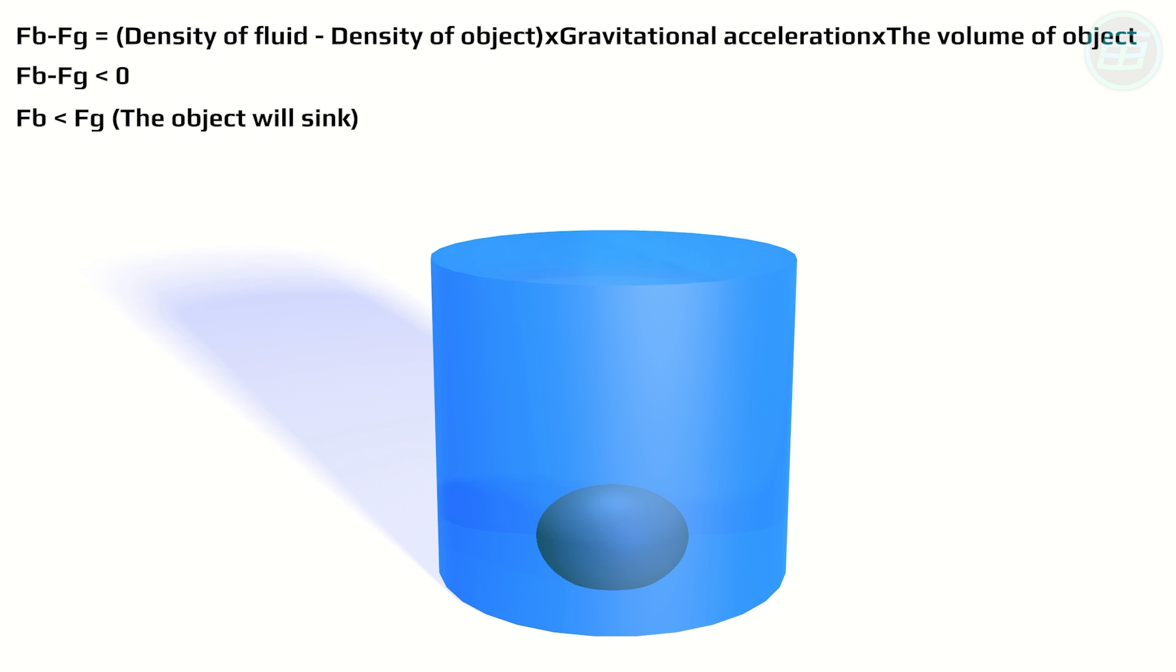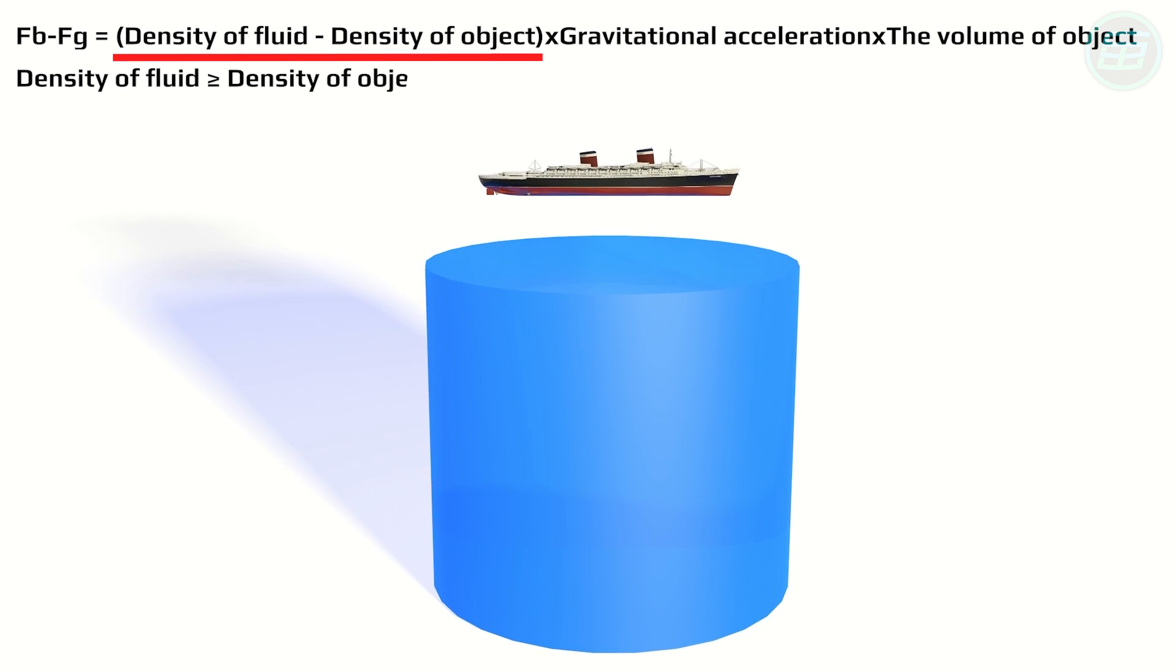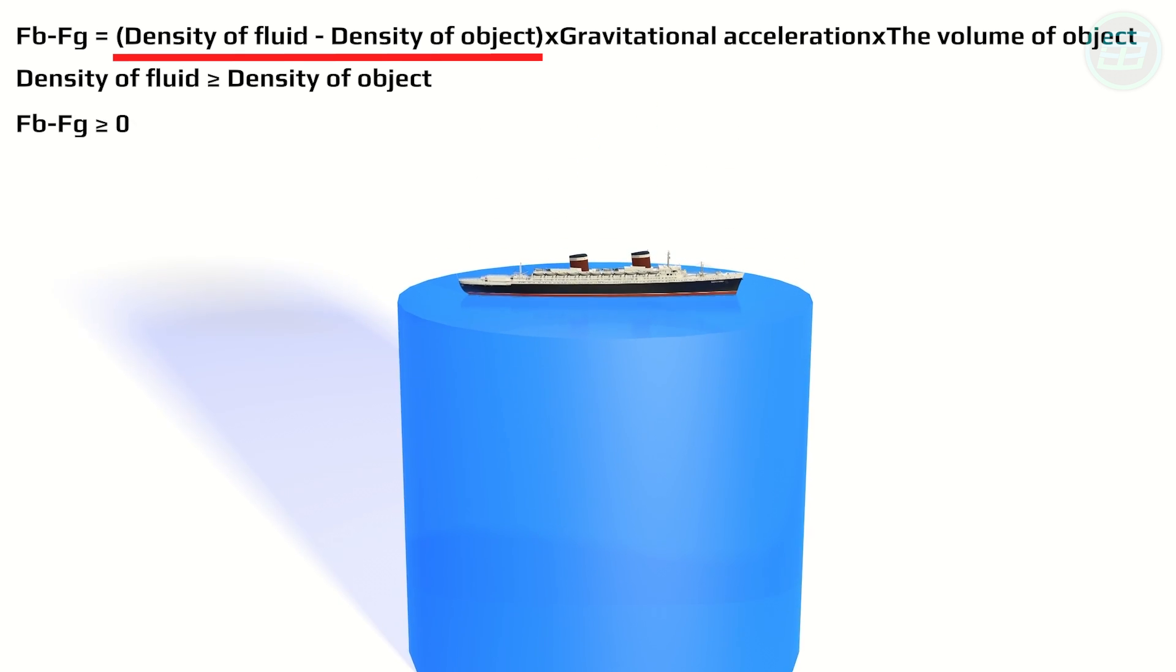The only thing that determines whether buoyancy minus gravity is positive, negative or zero is the density of the fluid and the average density of the object. If the density of the fluid is greater than the average density of the object, then the object will float.